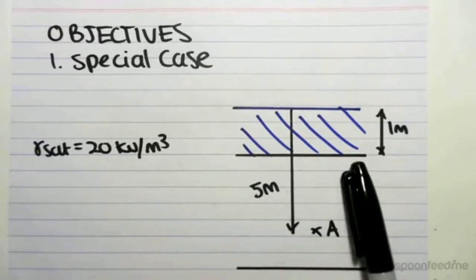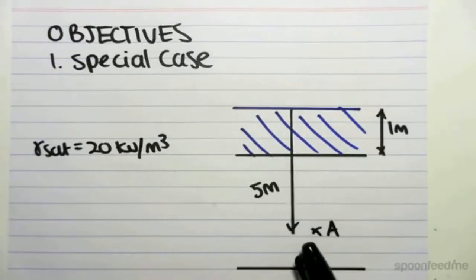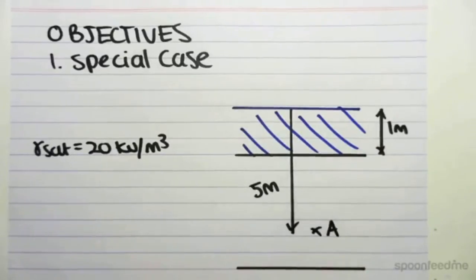You can think of this as a river or a lake. So we've got a lake which is a certain depth of water, and we want to find the effective stress at some point below the surface of this lake or river.